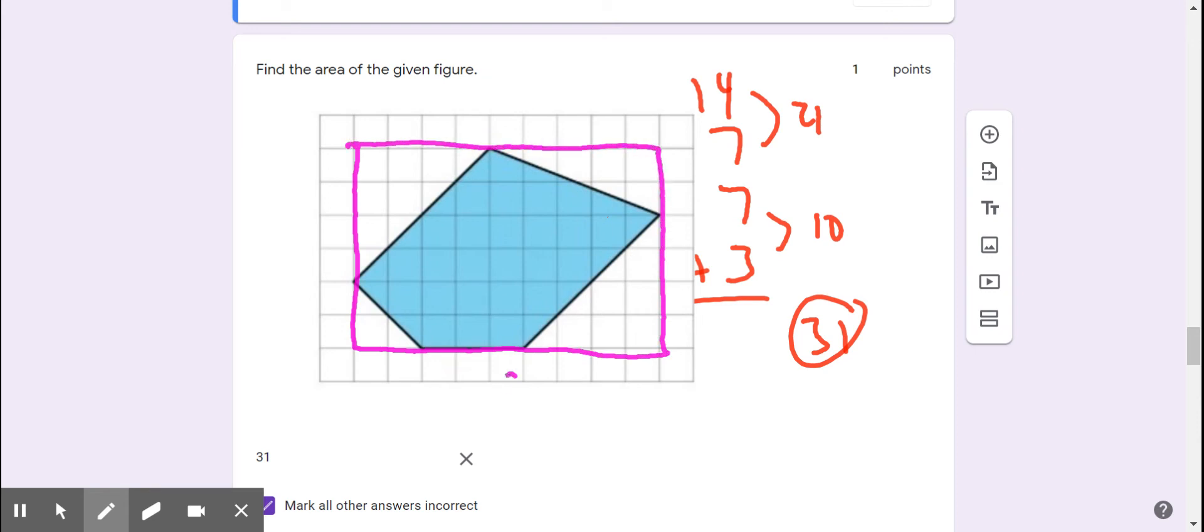And this is going to make a nine by six rectangle. Nine times six is 54 square units. Let's keep that in mind. That is the area of the entire rectangle.